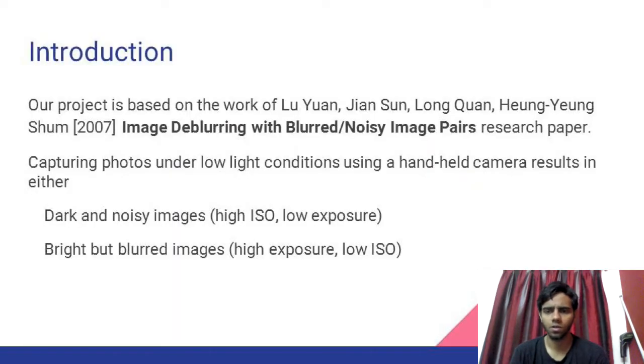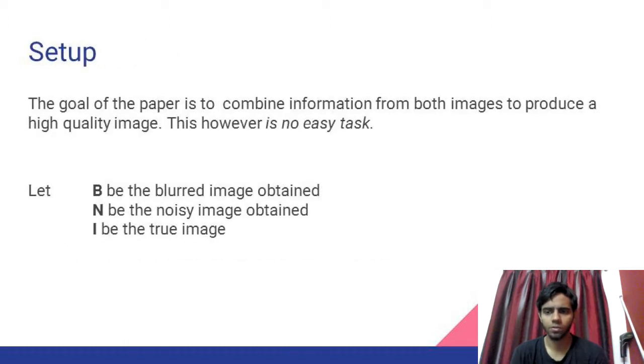Our project is based on 2007's Image Deblurring with Blurred and Noisy Image Pairs research paper. When capturing photos under low light conditions with handheld cameras, images are likely to be blurred or dark and noisy. The goal of the research paper is to use information from both these images to produce a high quality image that would be better than deblurring or denoising the respective images.